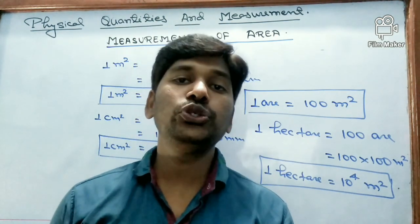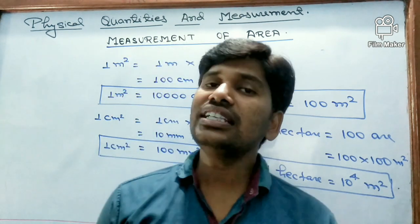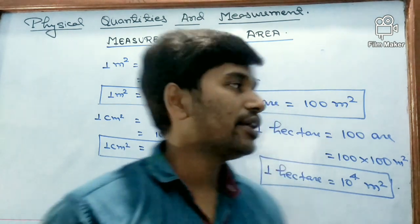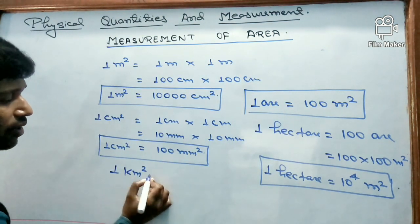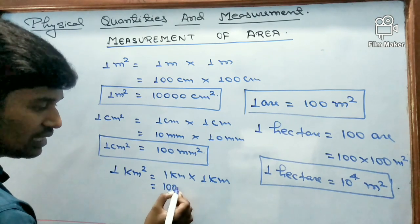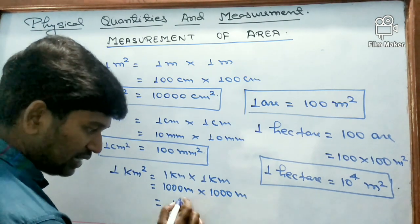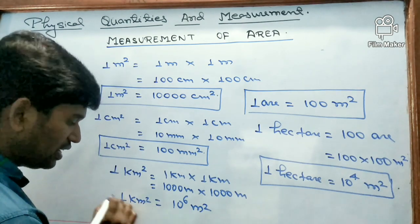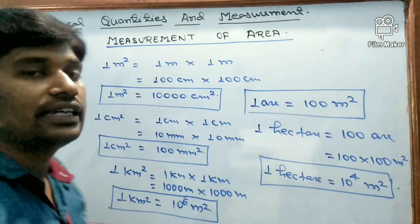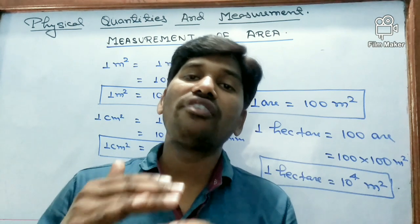Large areas can also be measured in kilometer square. One kilometer square = one km × one km = 1000 m × 1000 m = 10⁶ meter square. So one kilometer square equals 10⁶ meter square. These are the relationships between different units of area.